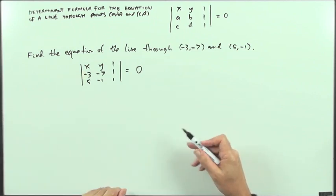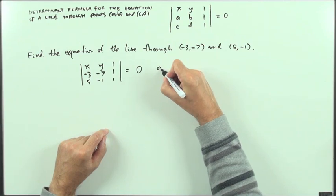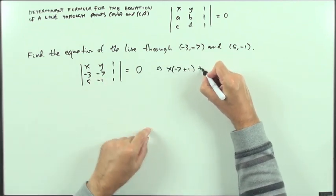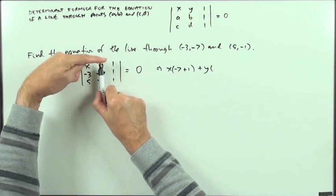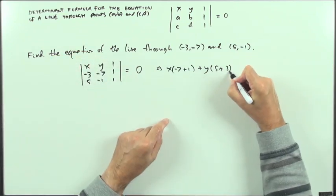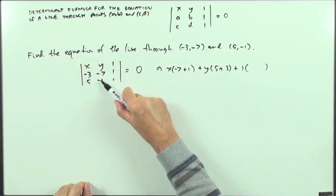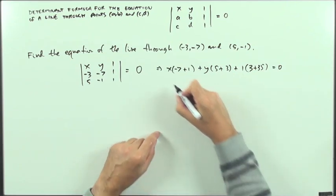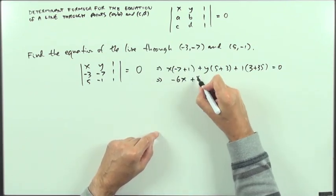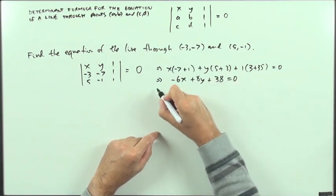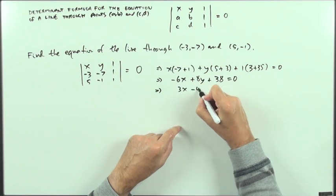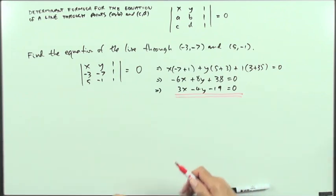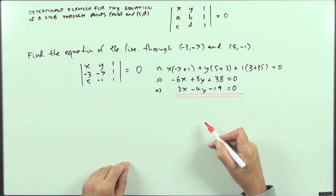Expanding along the top row: x times its minor gives (negative 7 minus negative 1) = negative 6; y times its minor reversed gives (5 minus negative 3) = 8; and 1 times its minor gives (negative 3 plus 35) = 38. So: negative 6x plus 8y plus 38 = 0. Simplifying by dividing by negative 2 gives 3x minus 4y minus 19 = 0 — the equation of the line, arrived at by the determinant formula.